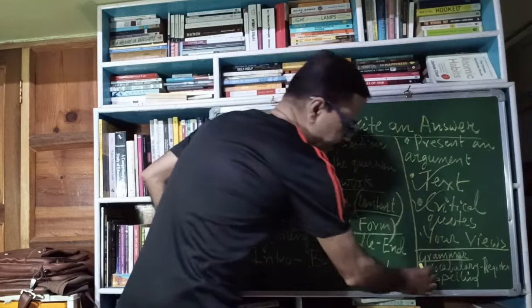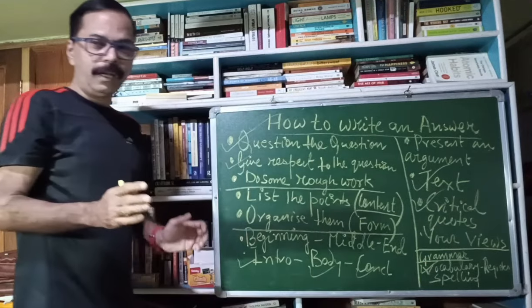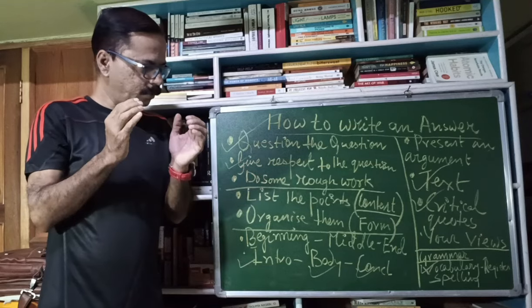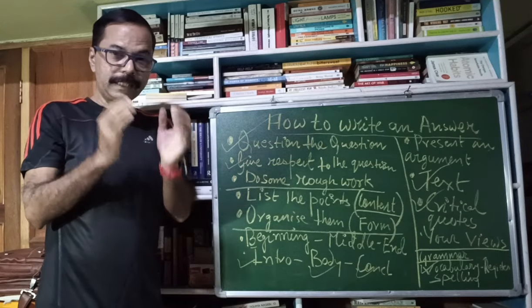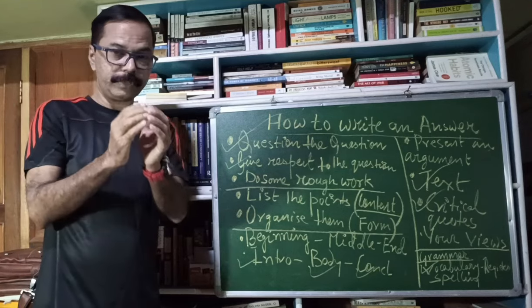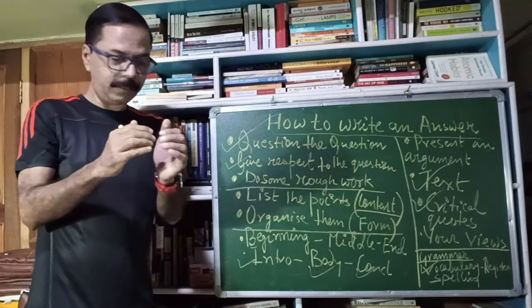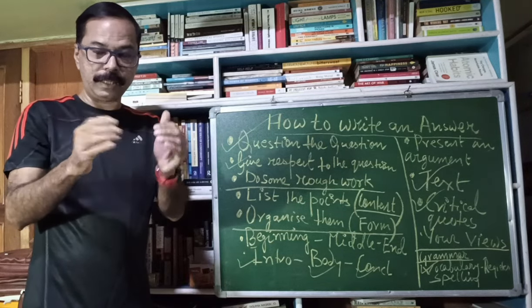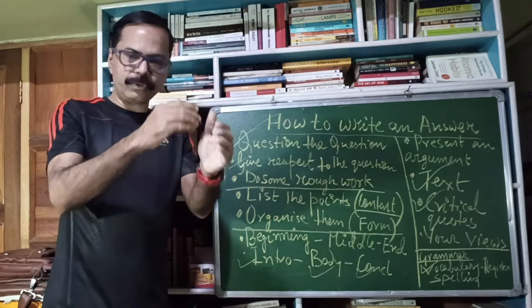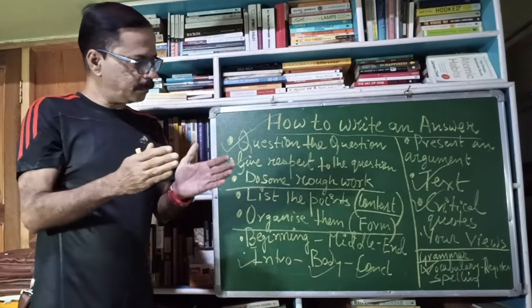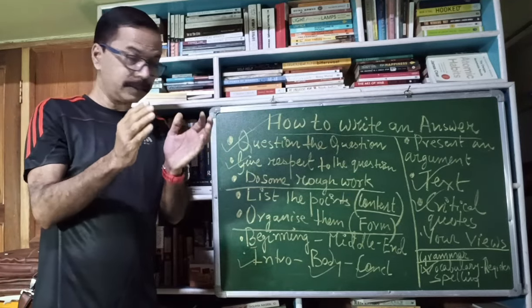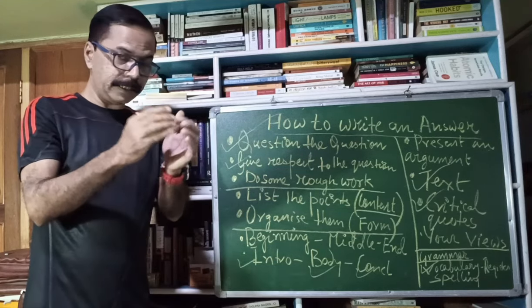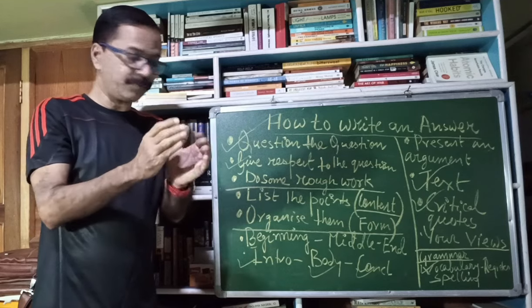Then vocabulary. You should have a good word stock. And by vocabulary, I don't simply mean general vocabulary. You should have a good command over the technical vocabulary. That is, you should have a command over the register of literature. Every topic has its own set of vocabulary which is called register. Topic specific vocabulary. Literature has its own register. So as students of literature, you should have a good command, good understanding of the register of literature. So that when you write your answers, you can use such words which are perfect for the topic.